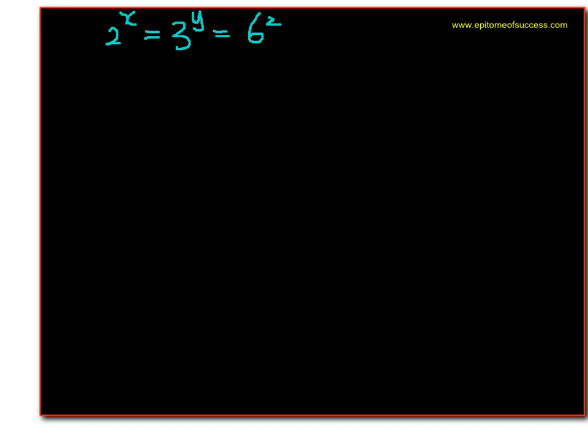We basically add something to the equation. So we say let a equal 2 to the power of x. And since they are all equal, which means this will also equal 3 to the power of y and equal to 6 to the power of z. So once you have this new information where you let a equal 2 power x, 3 power y and 6 power z, here's how we're going to make use of the information.